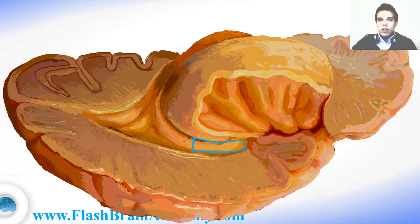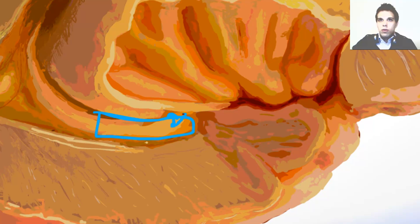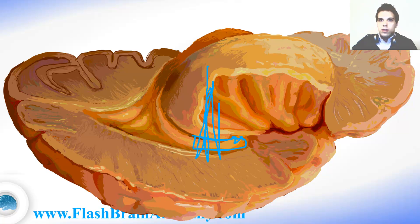Now I will talk about the inferior horn of the lateral ventricle. This over here is the hippocampus — the end portion of the hippocampus creates the medial wall of the inferior horn. The floor is created by the collateral eminence, which is an eminence created by the collateral fissure from the outside, the same way the calcar avis is created. Looking up from inside we see the medial part of the roof created by the terminal stria and the lateral part of the roof created by the cauda of the caudate nucleus.